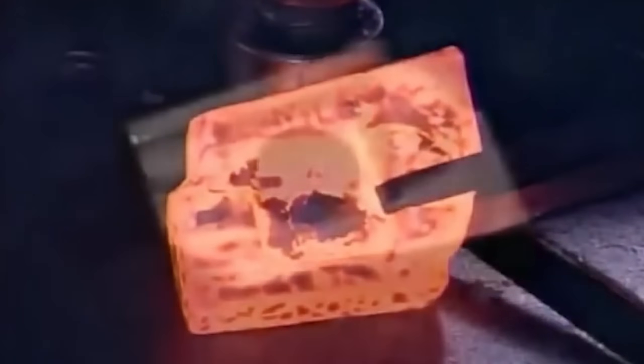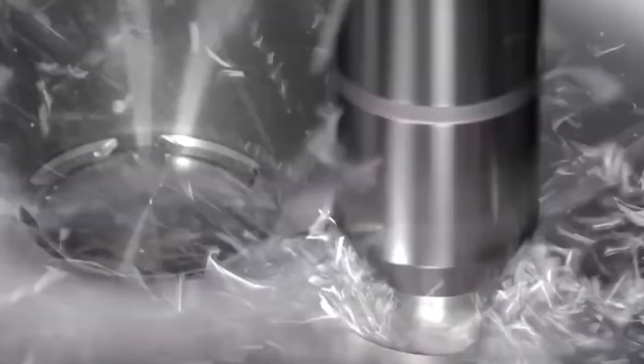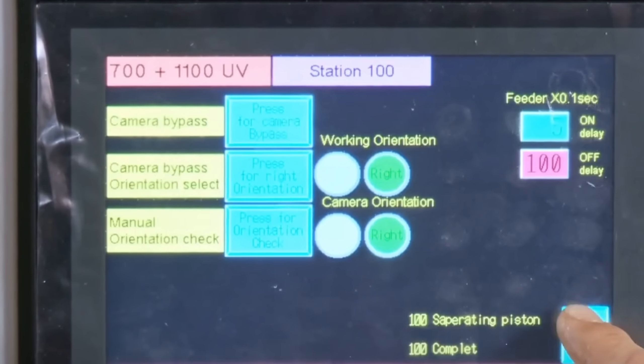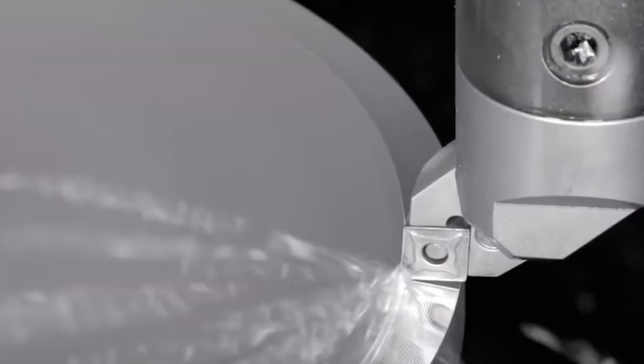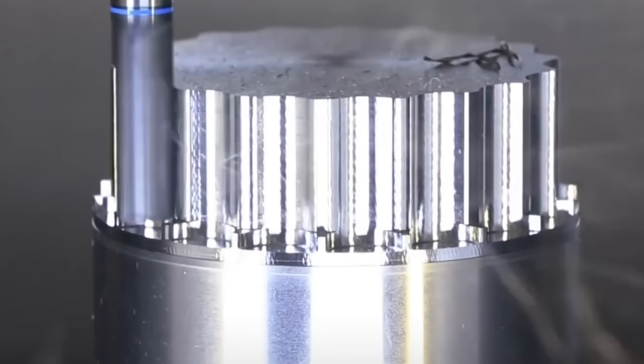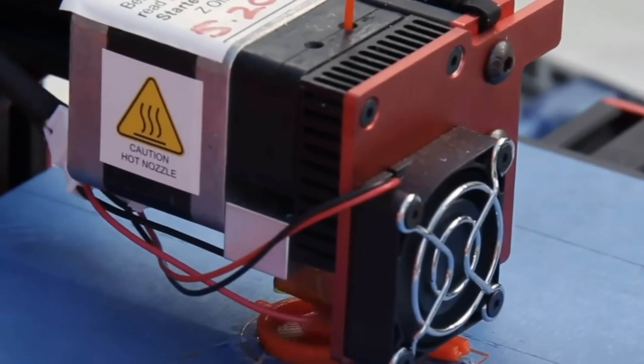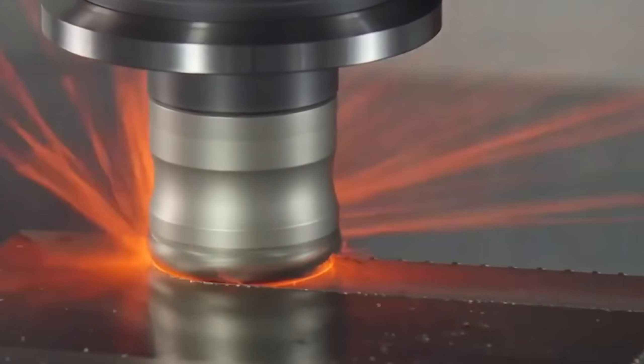Once a block passes inspection, it moves on to shaping. The next step uses CNC milling machines. These are computer-controlled tools that carve the steel with a level of accuracy a human hand can't match. The machines follow CAD-based instructions, cutting away excess material and forming the basic outline of the frame.